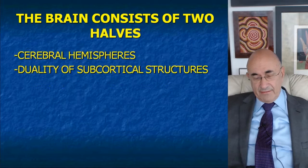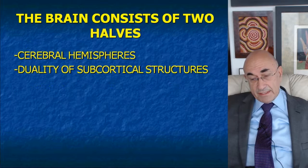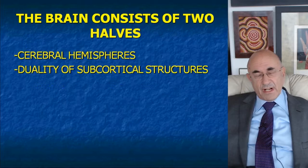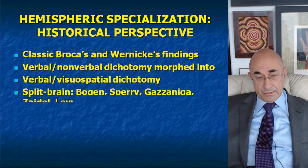Everything else, both cortically and subcortically — at the level of the striatum, at the level of the diencephalon, at the level of the limbic system, at the level of the brainstem — everything comes in pairs. So let's keep that in mind, because our discussion will not be limited to the neocortex. It will also involve a variety of subcortical structures.